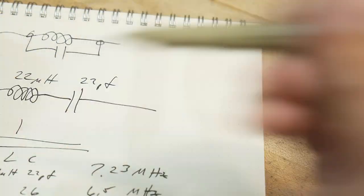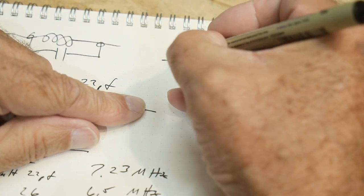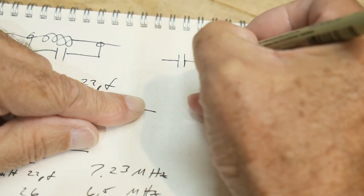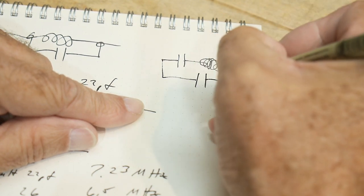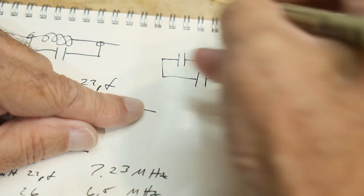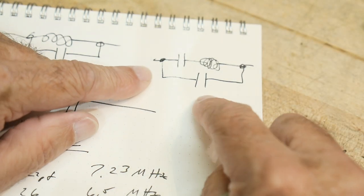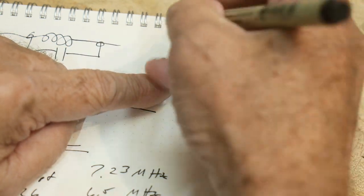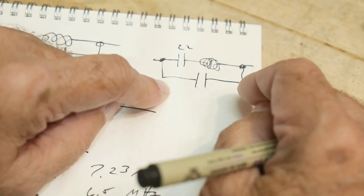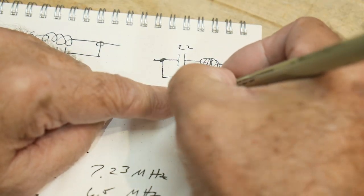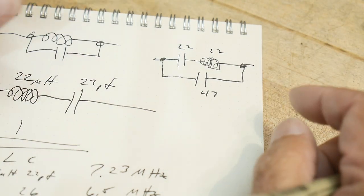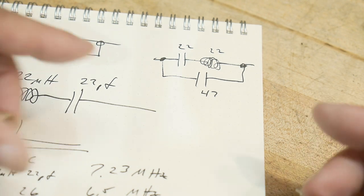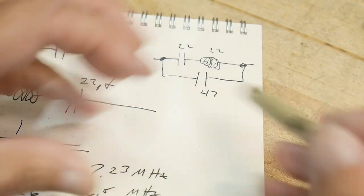We have a dip and we have a peak. Well guess what, we can put them both together. Let's get them together, maybe there'll be some synergy. We're going to have a series circuit and then we're going to put in a parallel circuit. So we're going to have an inductor and a capacitor - 22 and this one is actually a 47 - so we're gonna have a 22 and a 22 and a 47. Let's hook that thing up and see what it does.